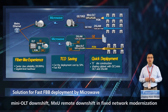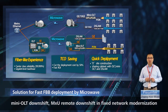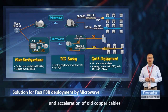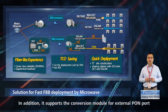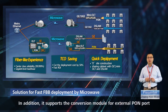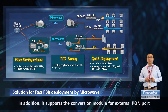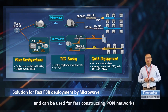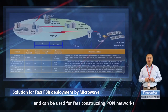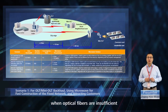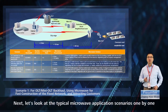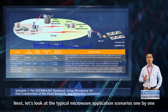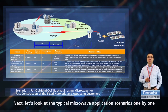These features include Mini-OLT downshift, MXU remote downshift in fixed network modernization, and acceleration of old copper cables. In addition, it supports the conversion module for external PON port and can be used for fast constructing PON networks when optical fibers are insufficient. Next, let's look at the typical microwave application scenarios one-by-one.